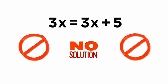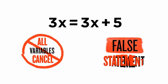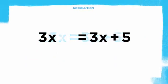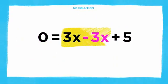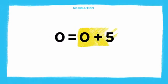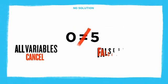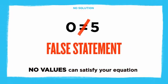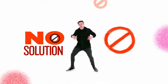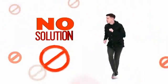When your equation has no solution, all your variables cancel and you're left with a false statement. This means that no values can satisfy your equation. False statement — no solution.